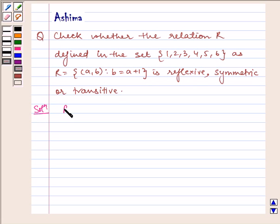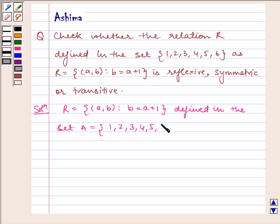Now let us write the solution. Given to us is relation R = {(a,b): b = a+1} defined in the set A = {1, 2, 3, 4, 5, 6}.